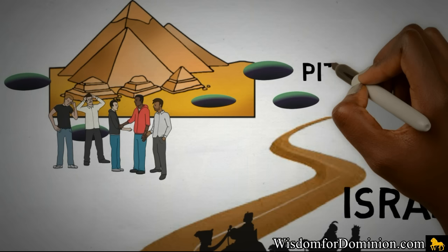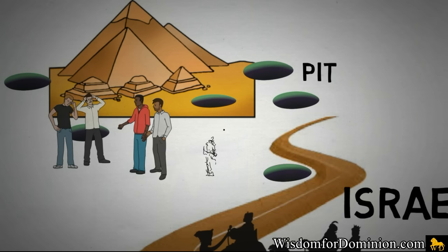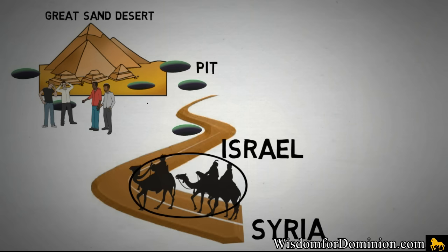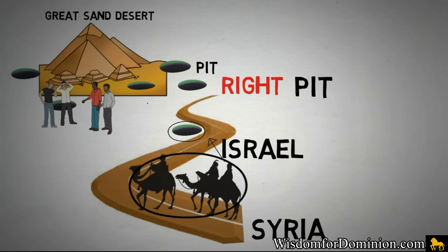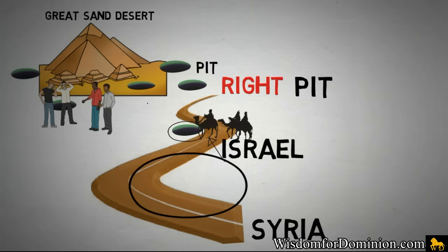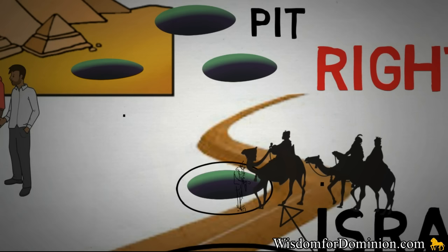He said it had to be one of the pits right next to the highway where the merchant caravans would be coming all the way down from Syria going to Egypt to do business. He said they had to have thrown him in the right pit, right next to the highway. Oh Jesus have mercy. It was the right pit because it was the pit that the caravans had to pass.